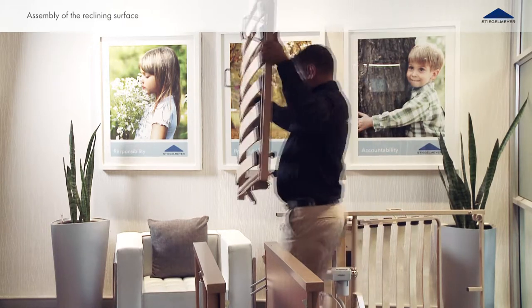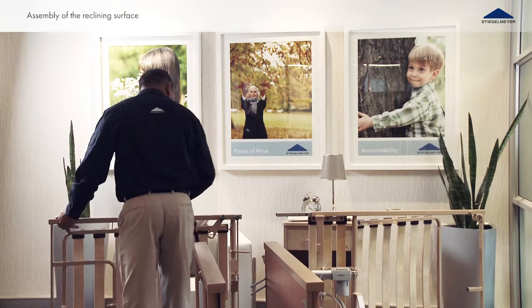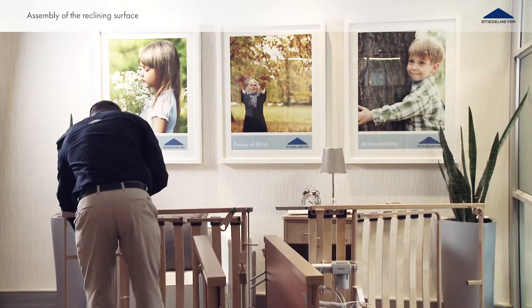Now take the foot side half of the frame and place it on the other reclining surface frame. Fold the lying surface away from the bed frame.